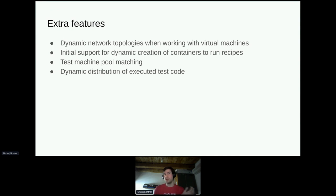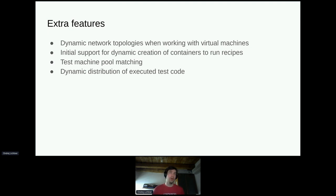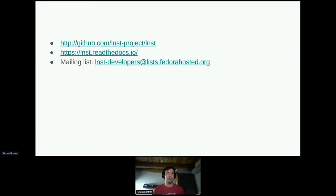Internally we have everything connected to a measurement database where we track the history of all performance measurements. The performance report and evaluate method also calls an automated evaluation that compares results to an older baseline and tells us if there is a possible failure. Extra features LNST supports: working with virtual machines where LNST creates a dynamic network topology automatically, though limited to VMs on your own laptop. What you just saw was initial support for dynamic creation of containers to run recipes — it has some limitations with more complicated network topologies, but we are working on that. Test code running on your test machines gets dynamically distributed over the network.